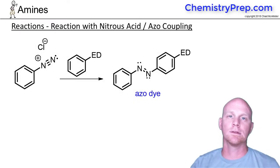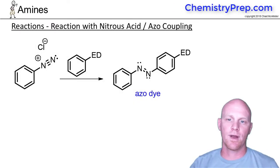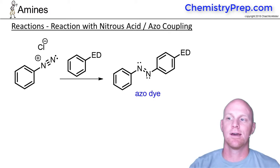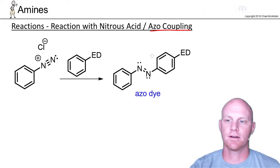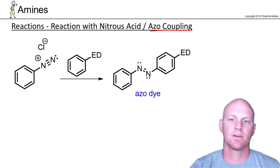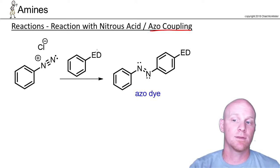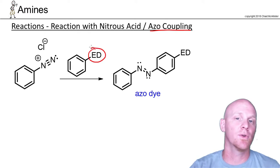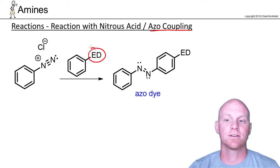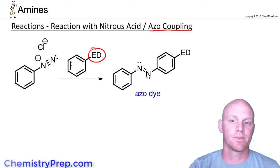We also want to take one quick look at one of the reactions of the arene-diazonium salts, and that's azo-coupling. In this case, you're going to react your arene-diazonium salt with another benzene. You want to use an activated benzene — one that has an electron-donating group attached — and it's going to lead to para-substitution.